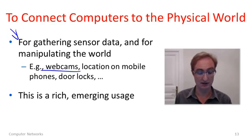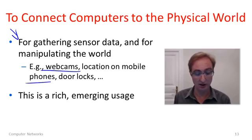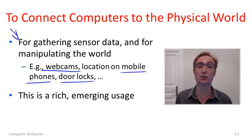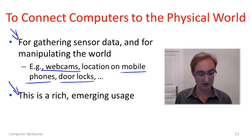So this is really what's going on with uses such as webcams, where you're observing, gathering video about the internet. Mobile phones here are all about sensing, where you might gather data such as location and combine that with data across the internet to provide maps of where you are. And yet another example, in this case for actuation, is something like a door lock, where you can remotely send commands to the door lock on your front door. Say to open it up if a friend is visiting and you're not there. This example is a use of computer networks, is an example of a rich emerging usage.